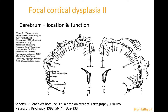As we all know, especially since Wilder Penfield drew his homunculus on the motor and sensory cortex in the 1950s, each location of the brain has a different function. So the seizure type in FCD depends on the location of the abnormality.